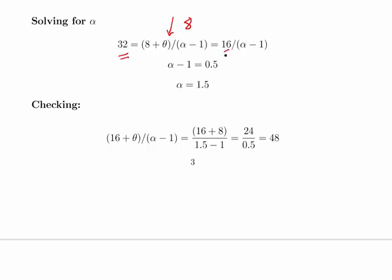8 plus 8 is 16, so 32 is equal to 16 divided by alpha minus 1. So that means alpha minus 1 is 0.5 and that means alpha is equal to 1.5.